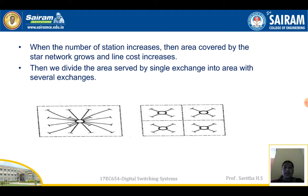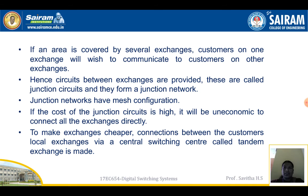We then divide the area served by a single exchange into areas with several exchanges. If an area is covered by several exchanges, customers on one exchange will wish to communicate with customers on other exchanges. Hence, circuits between exchanges are provided. These are called junction circuits and they form a junction network. Junction networks have a mesh configuration.